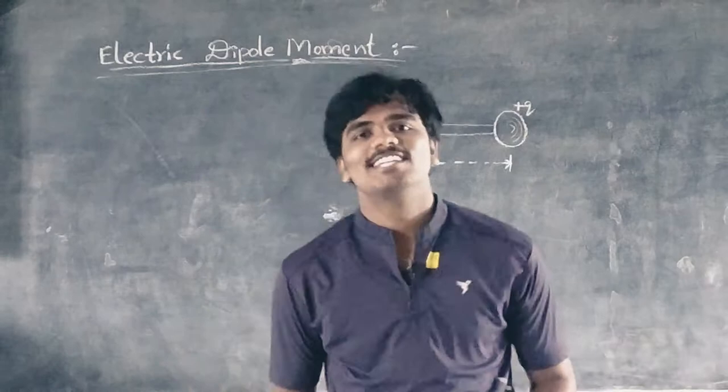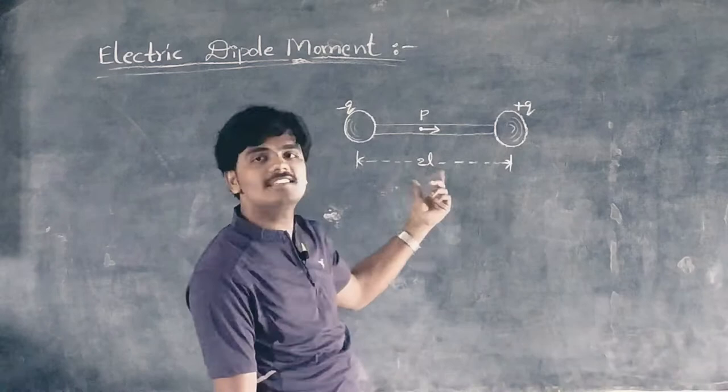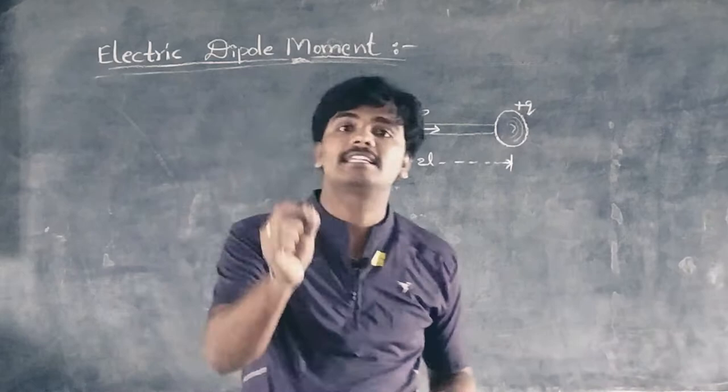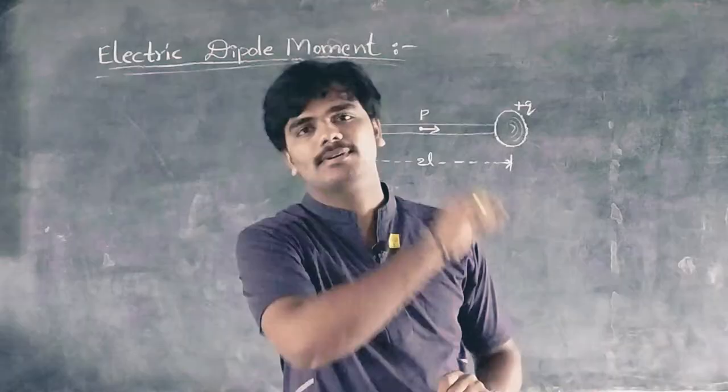Today I want to give a short note on electric dipole moment. Suppose the charges minus Q and plus Q are separated by a distance DL. The arrangement of two equal and opposite charges at a fixed distance is called an electric dipole — simply, two equal and opposite charges separated by a distance is called a dipole.